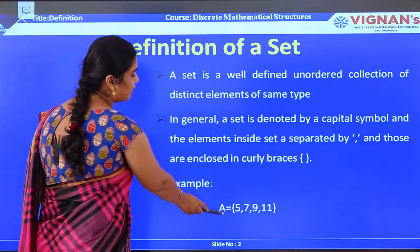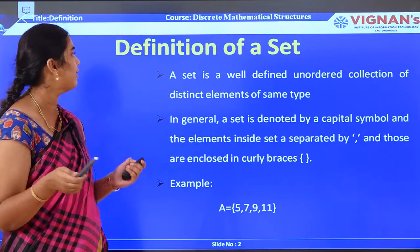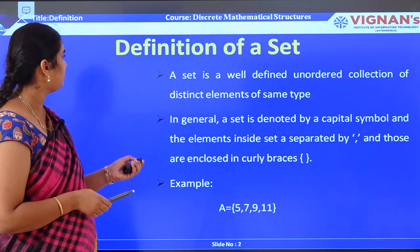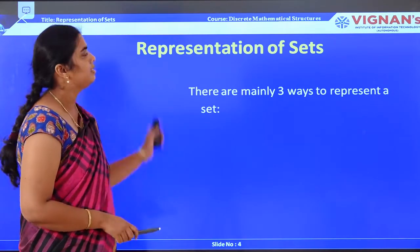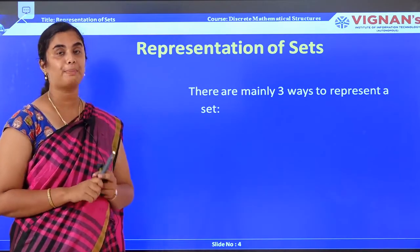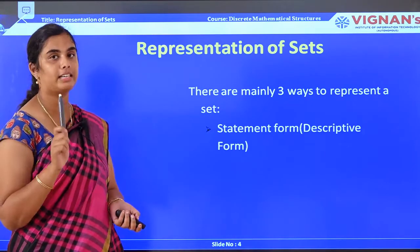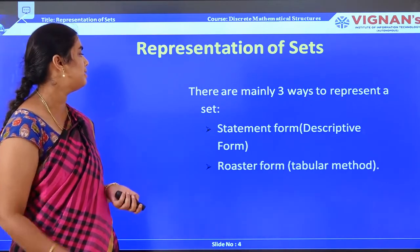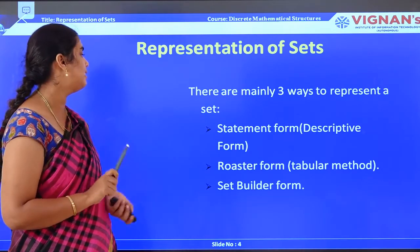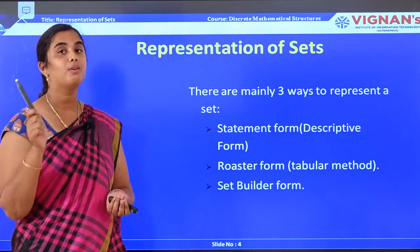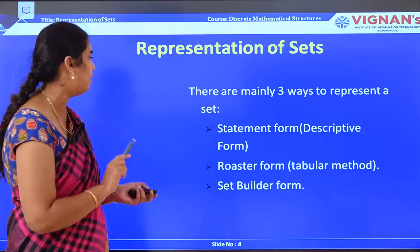There are mainly three ways of representing a set. The first is the statement form or descriptive form. The second is the roster form, also called the tabular form. The third is the set builder form. We will look at examples of each.